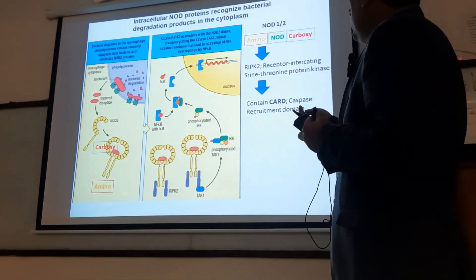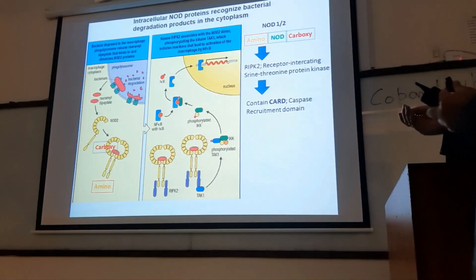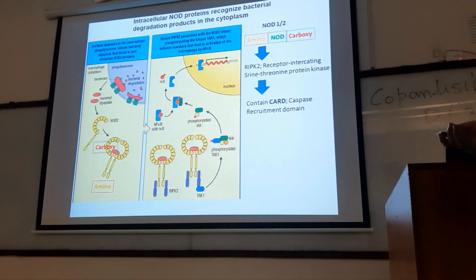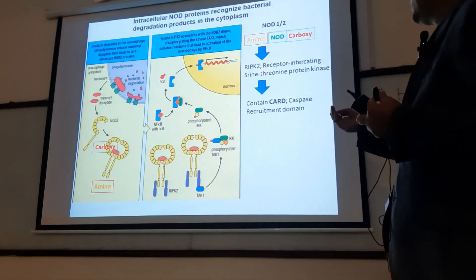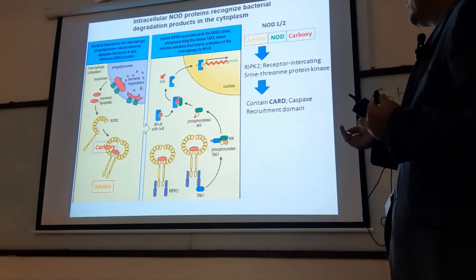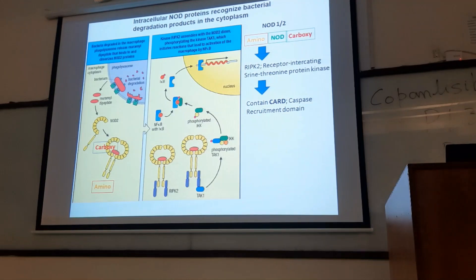The amino domain has a binding site for the enzyme RIPK2 — receptor interacting serine-threonine protein kinase — which indicates that this enzyme performs phosphorylation. RIPK2 also has a site known as CARD, the caspase recruitment domain.